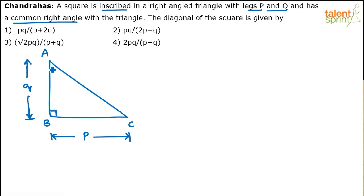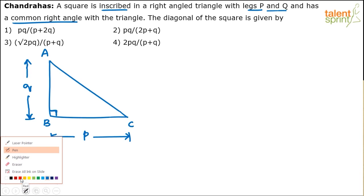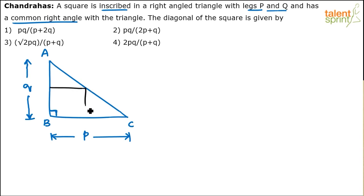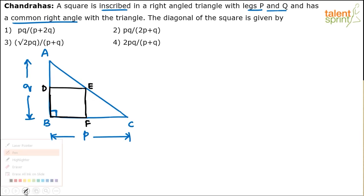A square is inscribed in this right angle triangle with legs p and q. Let me draw the square in a different color. The square will be labeled BDEF. Triangle ABC is right-angled at B. BC is one leg of length p, and AB is the other leg of length q. Inside this triangle, we place the square BDEF.